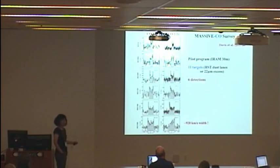But here we, as a pilot, we targeted 11 targets. They were selected to be our best chances for detecting CO based on either the presence of HST dust lanes or 22 micron excess. These are known to be correlated with the presence of CO. We targeted 11, and we actually made six of those we had detections. And they're detected both in CO 1 to 0 and CO 2 to 1. These are the six galaxies, and quite a few of them show the beautiful double horn profiles.